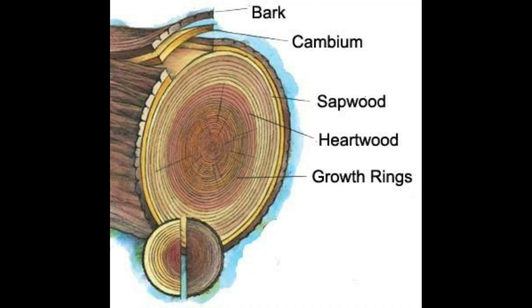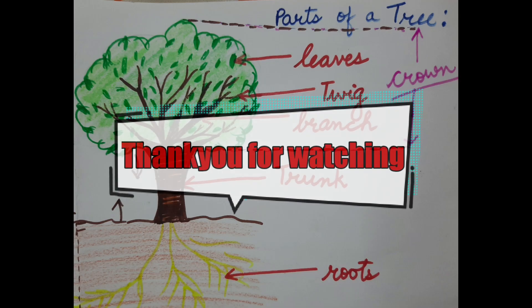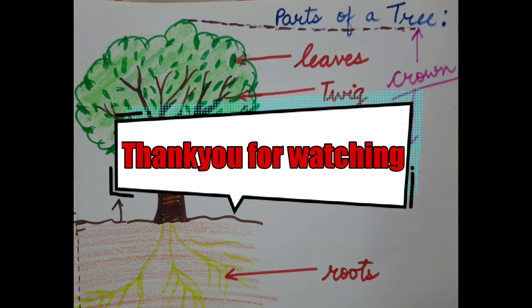Inside the trunk of a tree, there are a number of rings. The outer layer, as I told you earlier, is called the bark, B-A-R-K. So, hope you have understood parts of a tree.